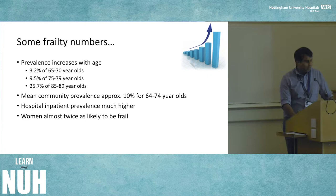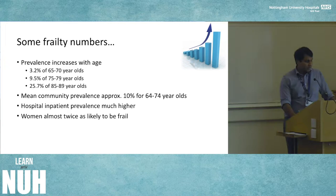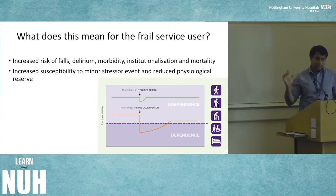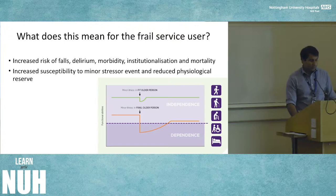Frailty increases with age. In the community, prevalence is about 10% for 64-to-74-year-olds, but in hospital — because we're seeing people who are vulnerable with an acute problem — the prevalence is much higher for acute admissions. Women are almost twice as likely to be frail, partly because peak muscle mass is lower in women, which contributes to why they're more likely to be frail as they get older. Andrew Clegg has summarised this beautifully in a conceptual diagram.